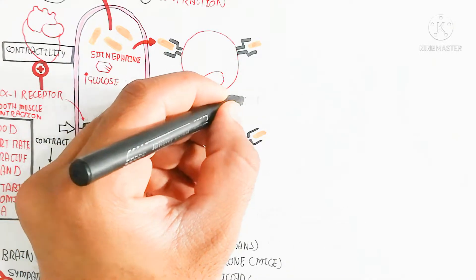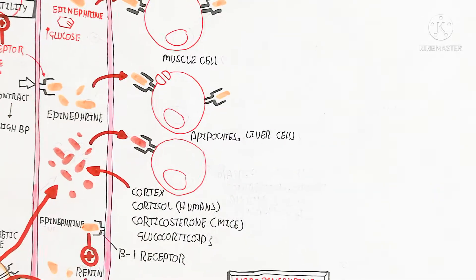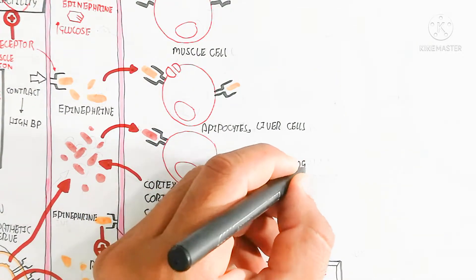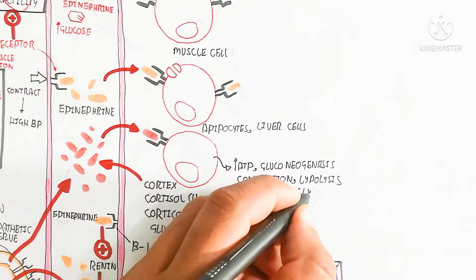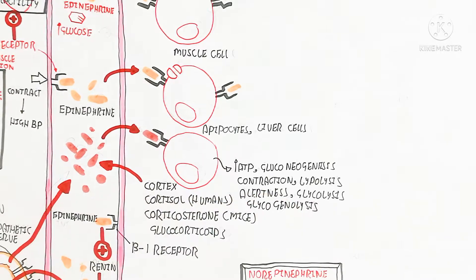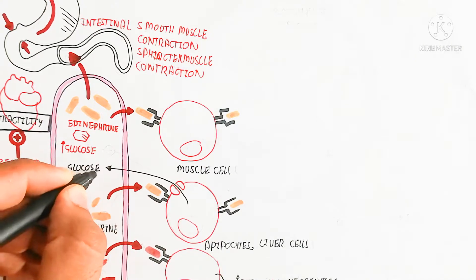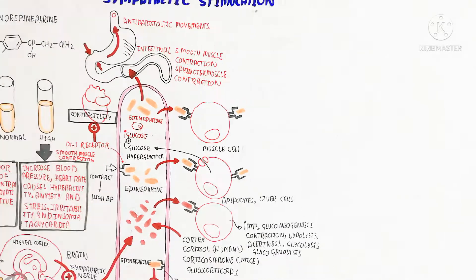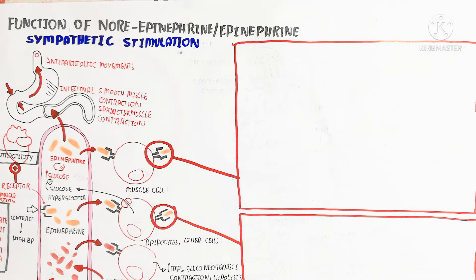Norepinephrine binds to its receptor and increases ATP production. Muscle cells, adipocytes, and liver cells produce more ATP through gluconeogenesis, muscle contraction (myocytes), lipolysis, alertness, glycolysis, and glycogenolysis. Glycogenolysis leads to hyperglycemia, increasing blood glucose levels. After the sympathetic stimulation ends, the glucose level returns to normal (isoglycemic).